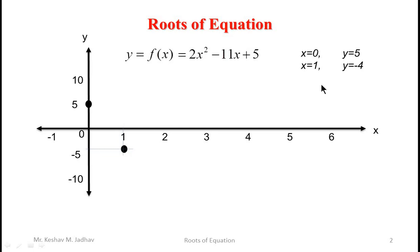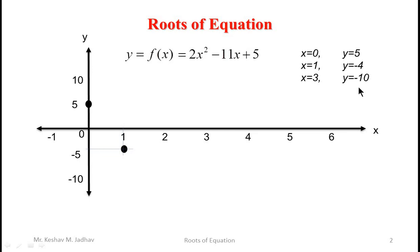Next let us consider x is equal to 3. So if you put x equal to 3 in this equation then we get 2 into 3 squared minus 11 into 3 plus 5, which is equal to minus 10. So for x equal to 3, y is equal to minus 10, and we can locate that point here.